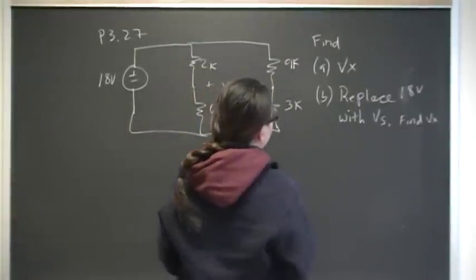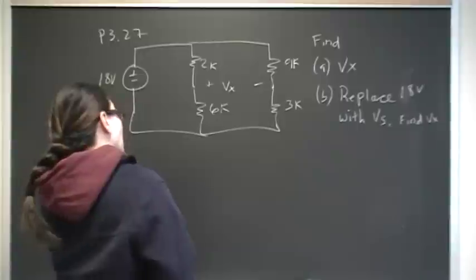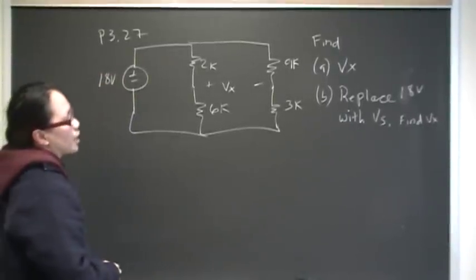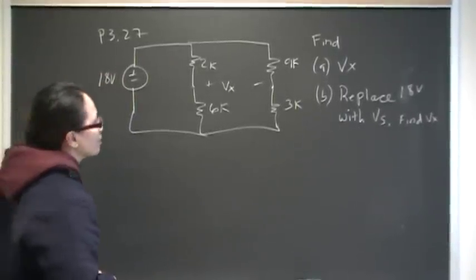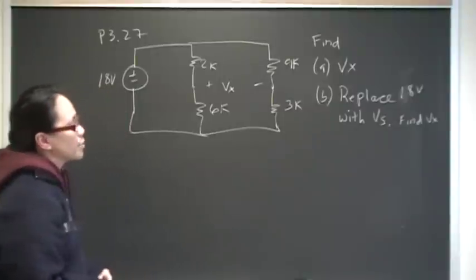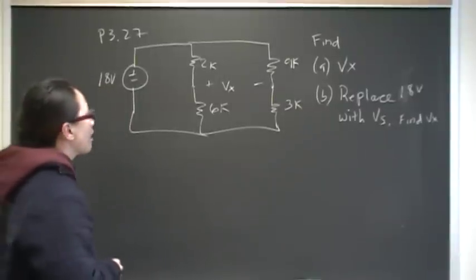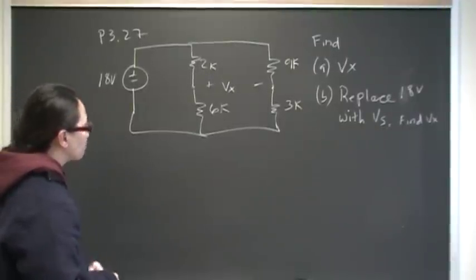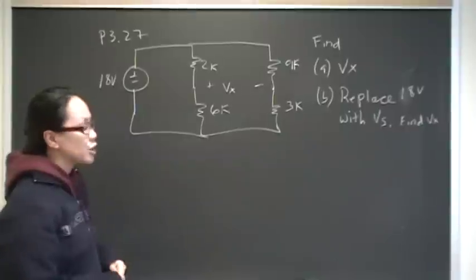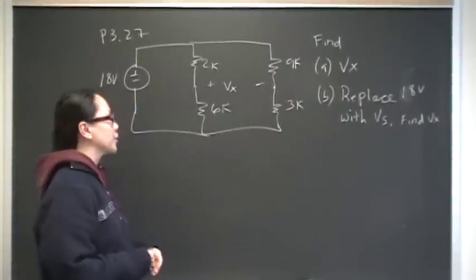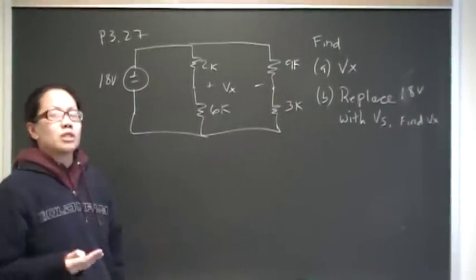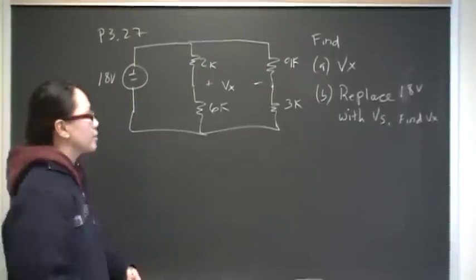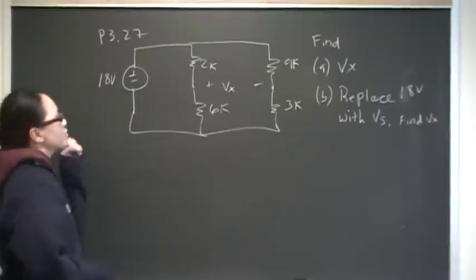And in part B, we want to replace this with a general voltage source and find the VX, so VX will be in terms of a general voltage source. The way to solve this is in part A you're going to use either voltage division or current division. Just to give you a hint, voltage division is a lot easier but you can use both. It doesn't matter, you'll get the same answer.